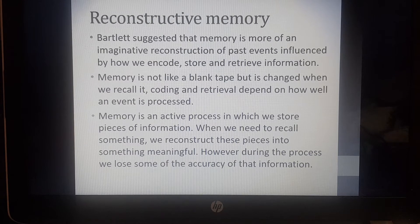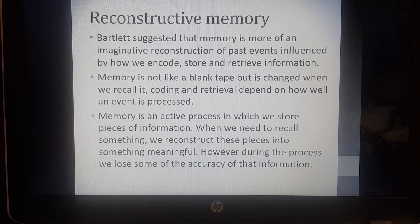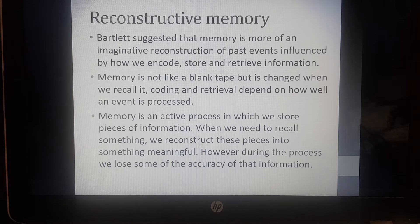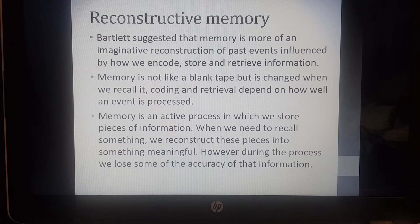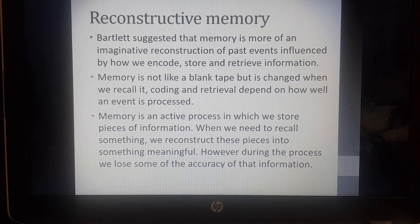However, during the process of reconstructing information that we haven't recalled for a long time, we can tend to lose some information, which does affect the accuracy. For example, if somebody asks you to recall an event from your early childhood, you remember fragments of that information, and then what you tend to do while recalling is reconstruct that memory — almost like adding parts to it to make it more detailed. During that process we do tend to lose some accuracy and tend to make things up as we go.